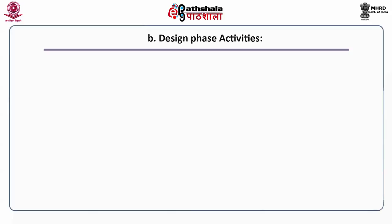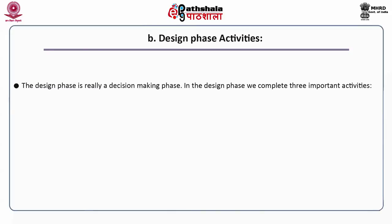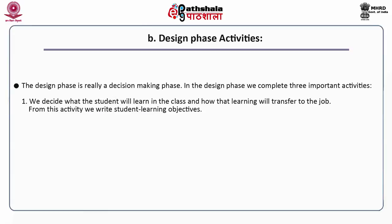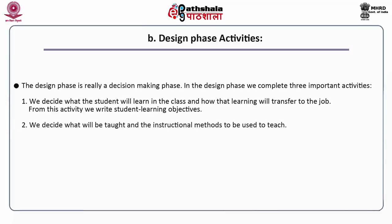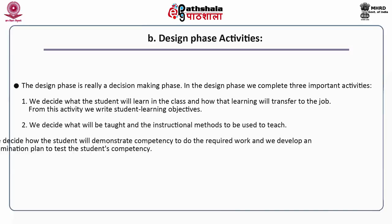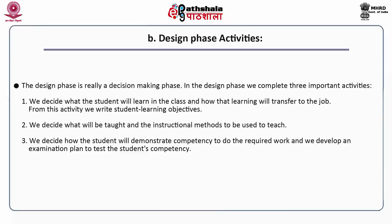The design phase is really a decision-making phase. In the design phase, we complete three important activities. First, we decide what the students will learn in the class and how that learning will transfer to the job — from this activity, we write student learning objectives. Second, we decide what will be taught and the instructional method to be used to teach. Third, we decide how the students will demonstrate competency to do the required work and develop an examination plan to test the students' competency.